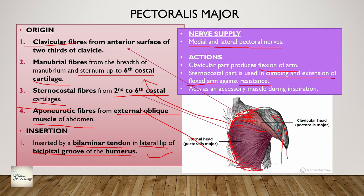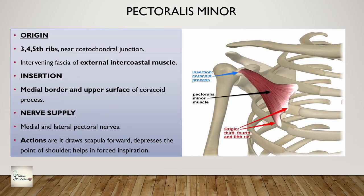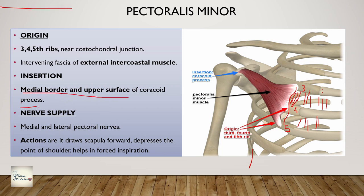Coming to pectoralis minor - you can see it originates from the costochondral junction of the third, fourth, and fifth ribs, and from the interdigitating fascia of the external intercostal muscles. It inserts into the medial border and upper surface of the coracoid process. The nerve supply is again by the medial and lateral pectoral nerves. Its actions are: it draws the scapula forward - since it is inserted on the coracoid process (part of the scapula), when it contracts it brings the scapula forward - it can depress the point of the shoulder, and it helps in forced inspiration.